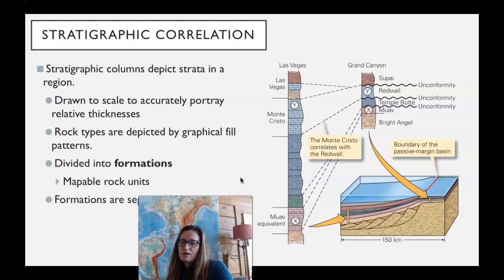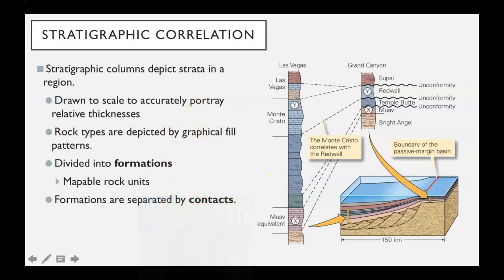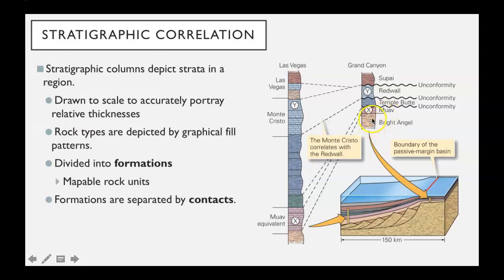Either way, they can correlate them — they know that the Supai is the Supai, the Redwall is the Redwall, because you map it over that big area. Those are called formations. The Supai, the Redwall, the Temple Butte, the Muav, and the Bright Angel — those rock units can cover a big area and we call them formations. Where one touches another is called a contact. Sometimes you have unconformable contacts, and sometimes you just have depositional contacts, like between the Bright Angel and the Muav, where a sandstone grades into a shale or clay unit.